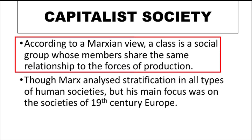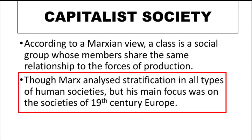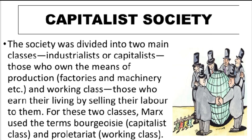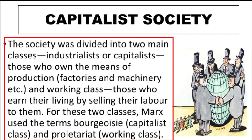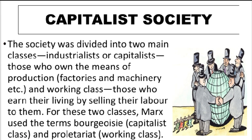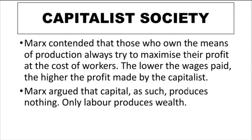The Marxist perspective system of social stratification is derived from social classes. These major classes are social groups whose members share a common goal and the same relationship. Marx analyzes stratification in all types of societies, but his main focus is on 19th century European societies, which were under the control of industrial capitalist mode of production. Society was divided into two main classes: industrialist capitalists who own the means of production, and the working class who earn their living through labor. In Marx's terms, these two classes are called the bourgeoisie (capitalist class) and the proletariat (working class).